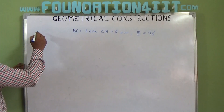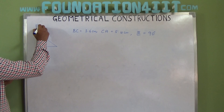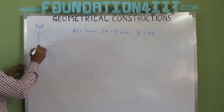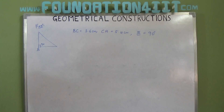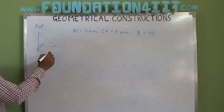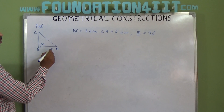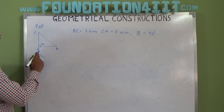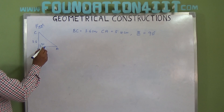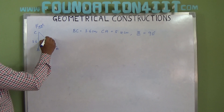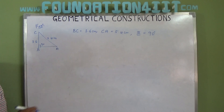Observe the rough diagram. If we draw a right angle triangle, then angle B should be 90 degrees. So this is point B, and the other points are A and C. We don't know A to B, but B to C is 3.6 and A to C is 5.4 centimeters.